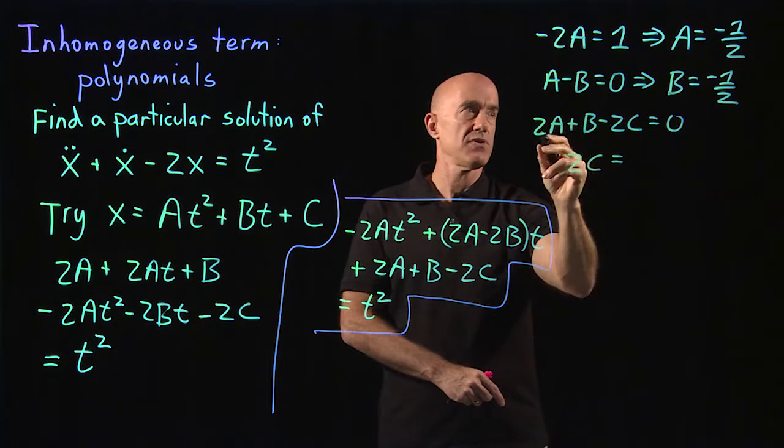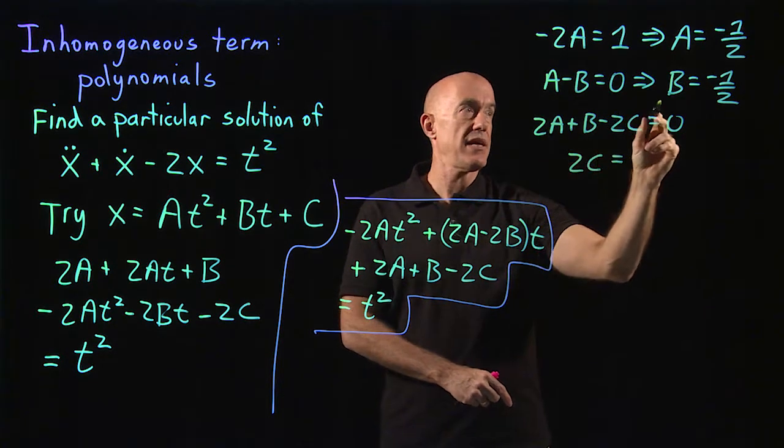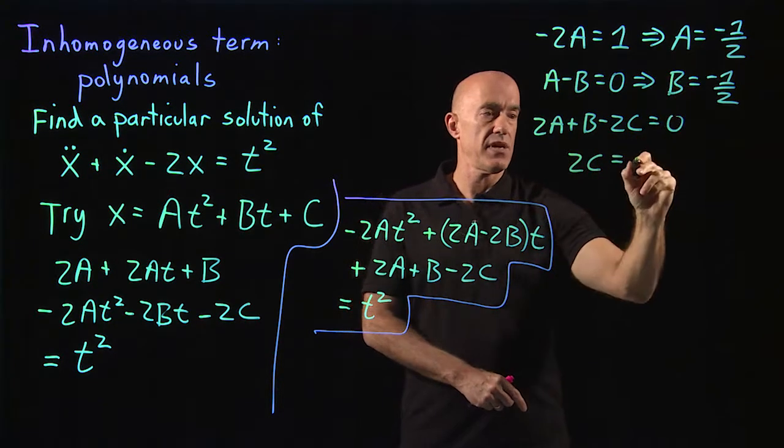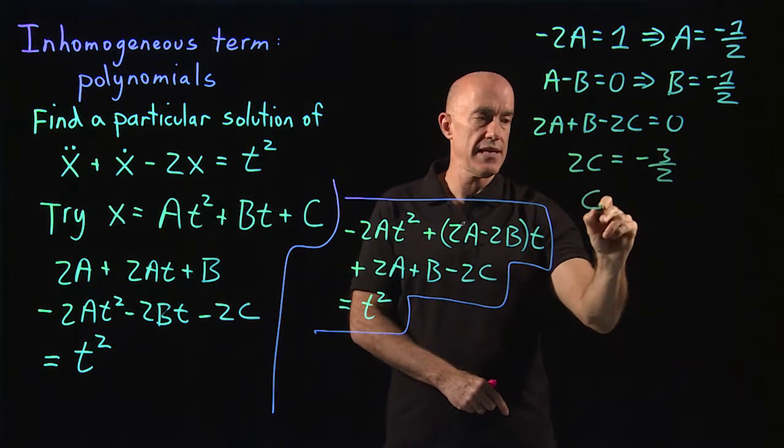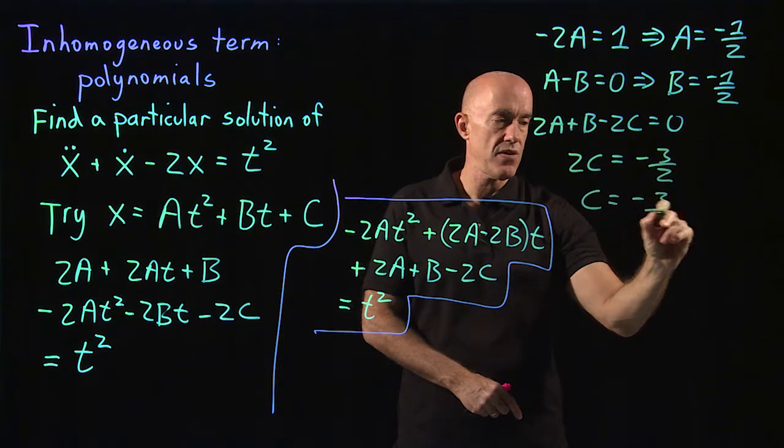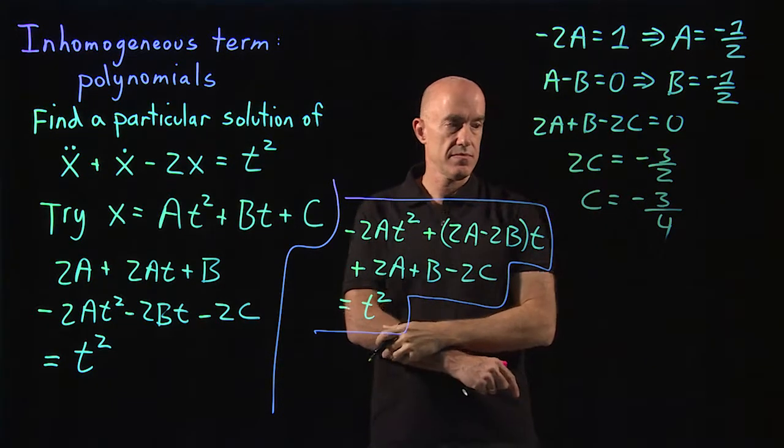A and b are the same, so it's equal to 3a, which is minus 3 over 2. So then c is equal to minus 3 over 4.